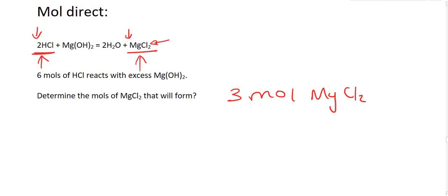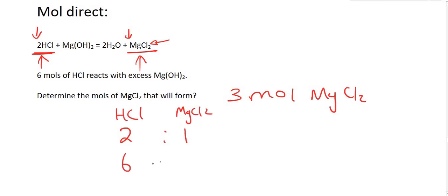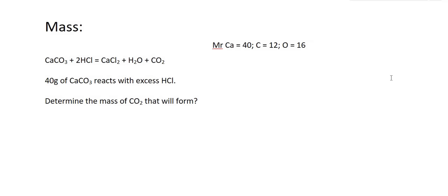Because the ratio is 2 HCl for every 1 MgCl2, it's a 2 to 1 ratio. We could do this: the ratio is 2 to 1, so if we have 6 HCl — this is actually quite a nice technique — then to stick with that ratio it would have to be 6 to 3.